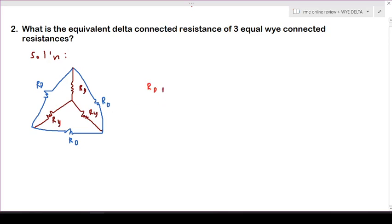We will have first the sum of the pair of two of the wye connected resistances. That will be Ry times Ry, our first pair, then Ry times Ry, the second pair, plus Ry times...